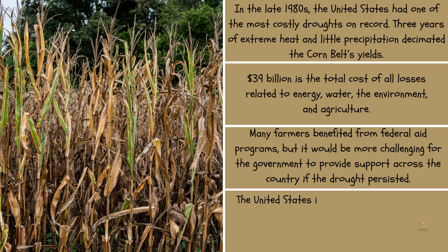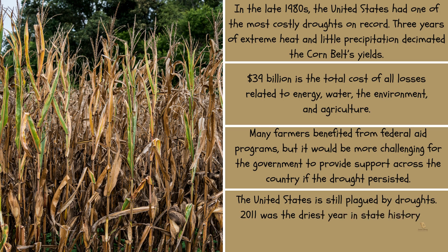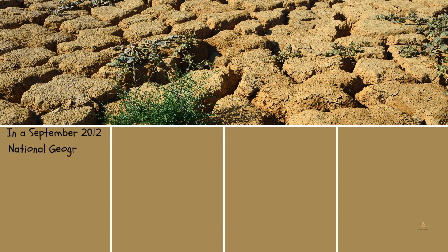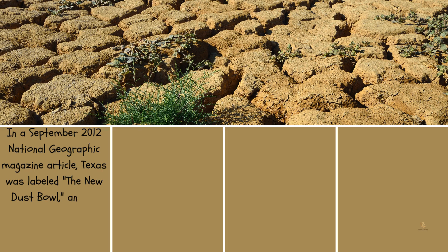The United States is still plagued by droughts. 2011 was the driest year in state history for Texas, which had been experiencing drought since 2010. In a September 2012 National Geographic magazine article, Texas was labeled the New Dust Bowl, and by 2013, drought was affecting 99% of the state.